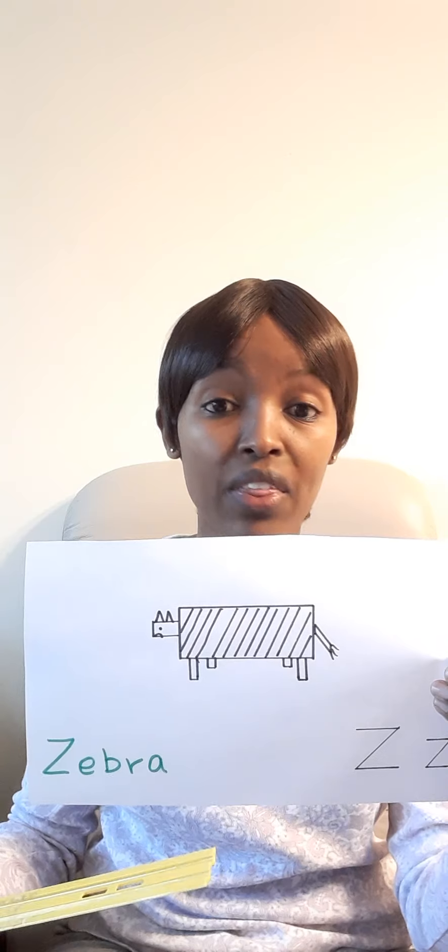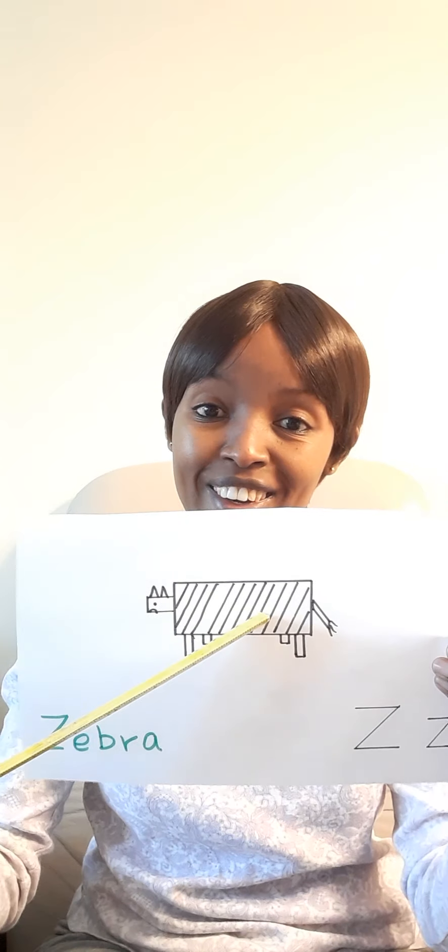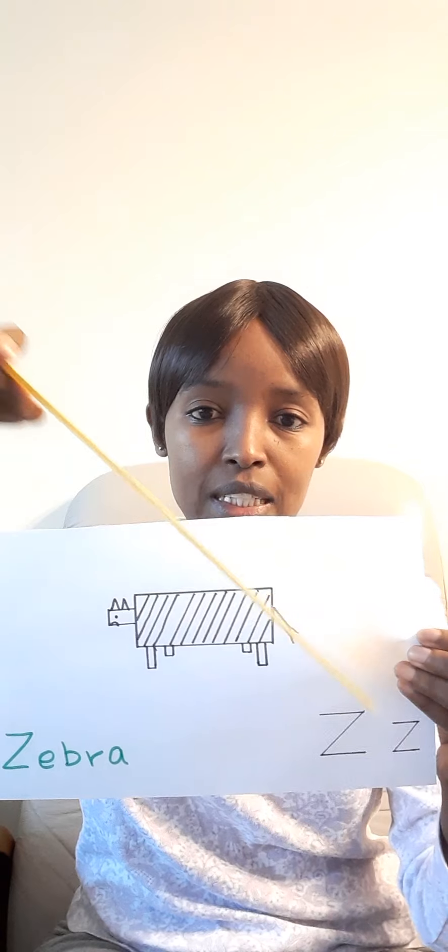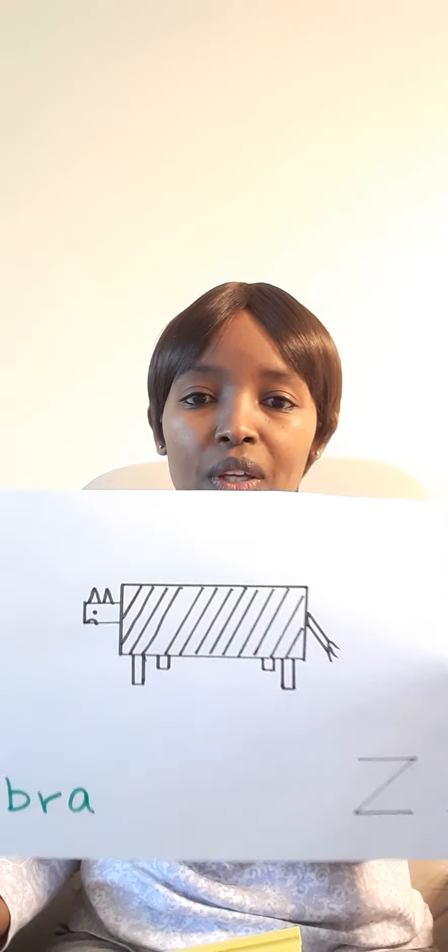And guess what? You'll be drawing a three-dimensional figure — 3D. Have you heard of 3D? You'll be drawing a 3D figure, and I know you can do it. Look at the tail — it's a rectangle that is diagonal, like slanting. You call that diagonal: two long sides, two short sides. And you put some hairs in the tail. Look at that — I know you can do it.